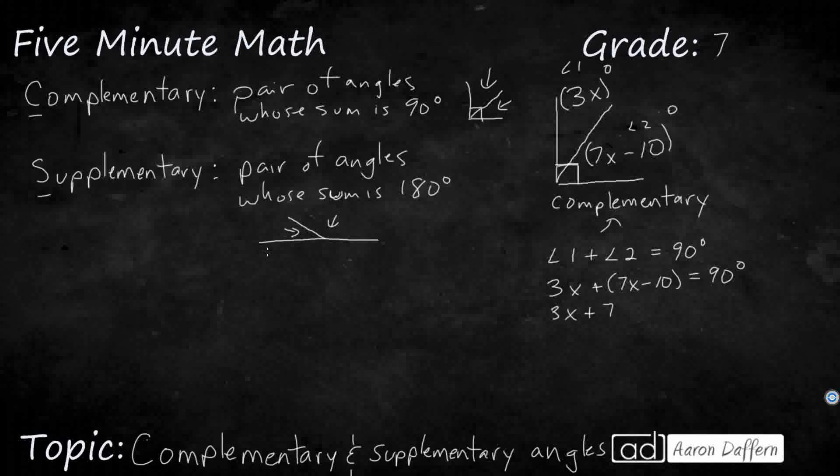So now, if we rewrite it like this, we should start thinking, let's combine like terms. So what do we have? I've got a 3x and a 7x. So 3x and 7x equals 10x. Minus 10 equals 90. Now, what I need to do here is I need to add 10 to both sides.